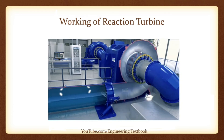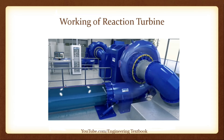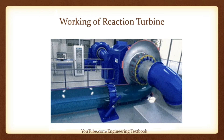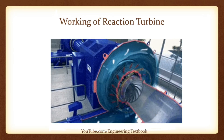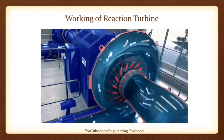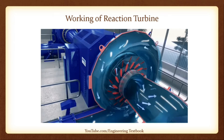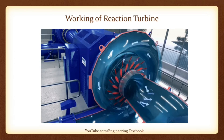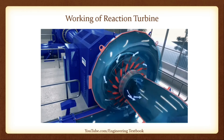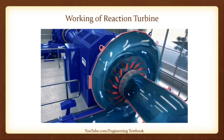Low head, high velocity water enters the spiral casing. As it enters the casing, it starts flowing through guide vanes into the runner blades. These guide vanes direct the flow of water to strike the runner blades at a proper angle to produce maximum power output. The water flowing through the spiral casing maintains consistent pressure throughout the circumference due to the uniformly decreasing cross-sectional area. The guide vanes can change their angle to increase or decrease the flow rate of water into the turbine.